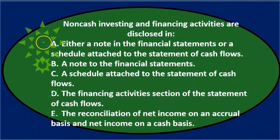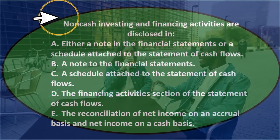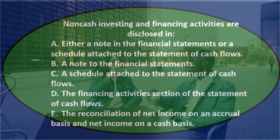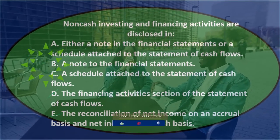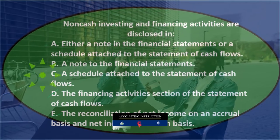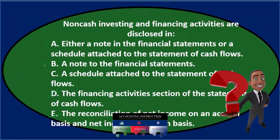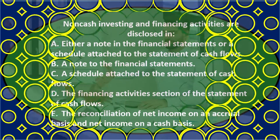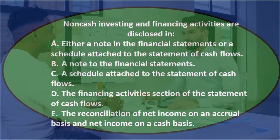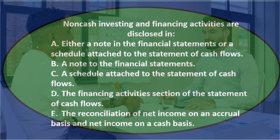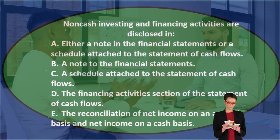Going through the remaining options again: non-cash investing and financing activities are disclosed in either A) a note in the financial statements or a schedule attached to the statement of cash flows, B) a note to the financial statements, or C) a schedule attached to the statement of cash flows. The key question is whether one specific form is required, or whether either is acceptable. The answer is that either form is acceptable, so the correct answer is A.